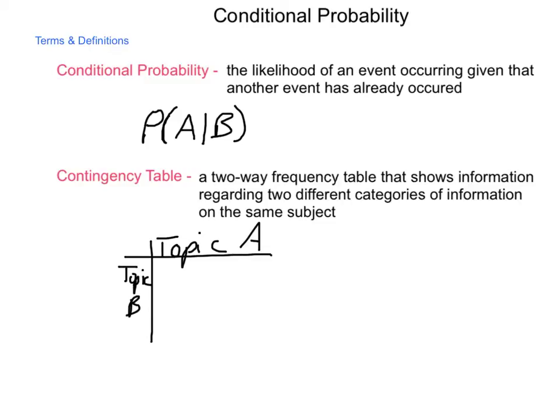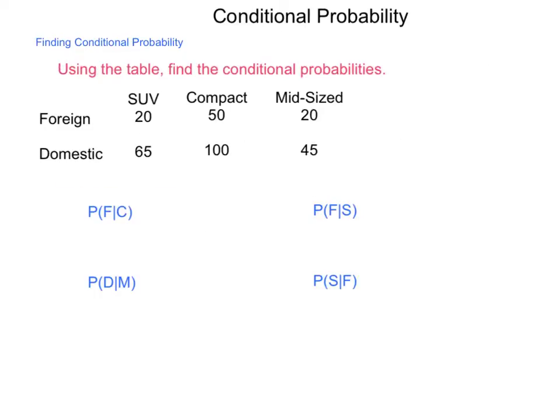We're going to be using these through the course of this lesson, so we'll get familiar with them. Let's look at how a conditional probability would be computed using a contingency table to find the conditional probabilities.